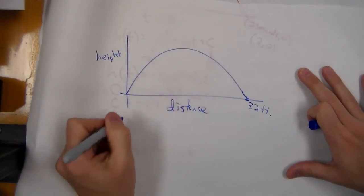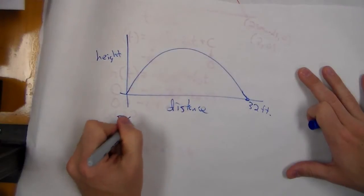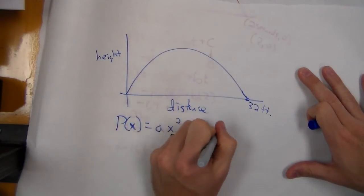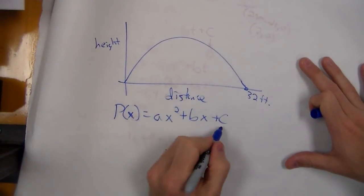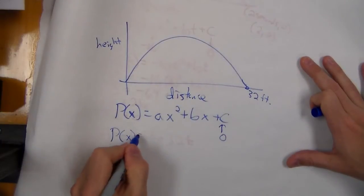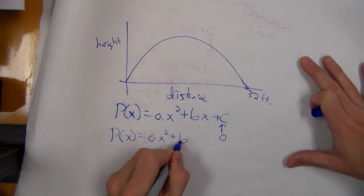I need to now write the function. We're going to call this p(x) = ax² + bx + c. So what do we know? We know the initial height is still zero, so p(x) = ax² + bx.